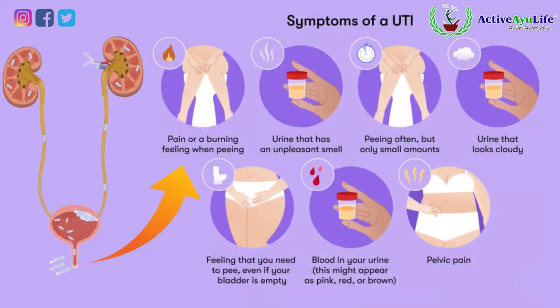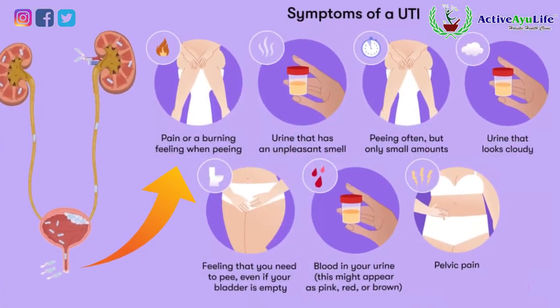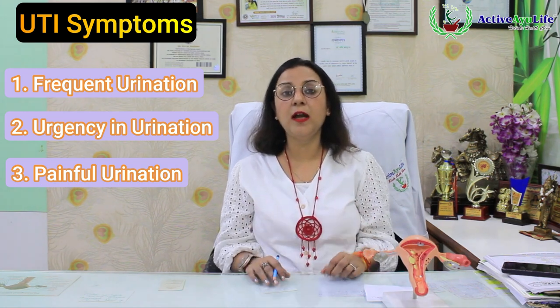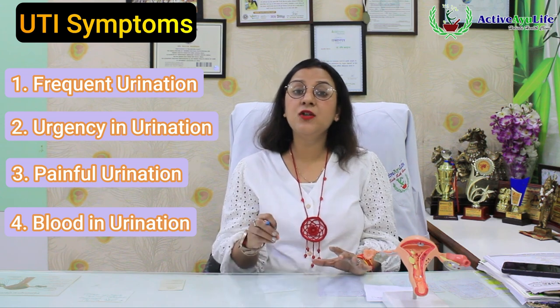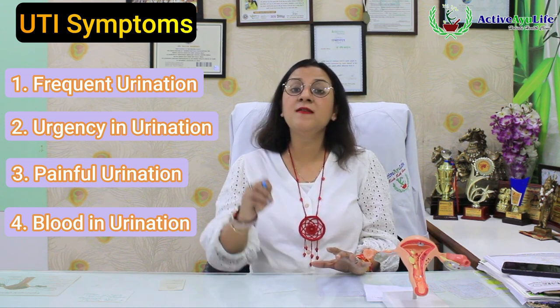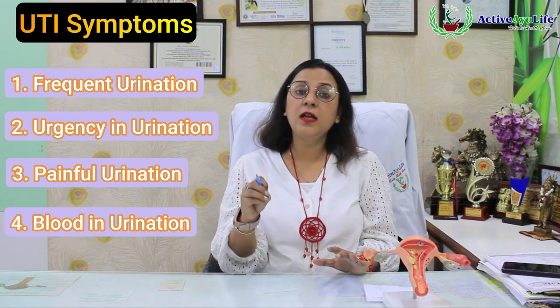UTI has some distinct symptoms. The first symptom is frequent urination. The second is hesitancy in urination. The third is urgency. The fourth is painful urination — pain with urination. The fifth is discoloration of the urine. And sometimes blood also comes in the urine. These are all symptoms of UTI.